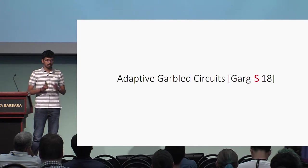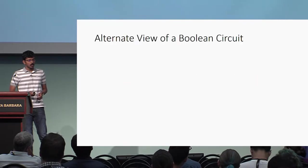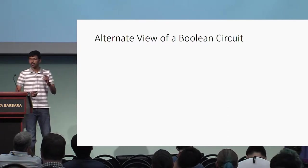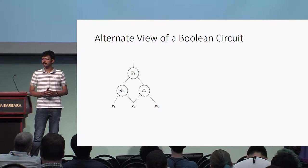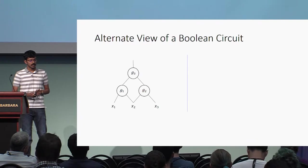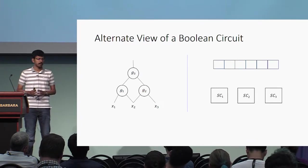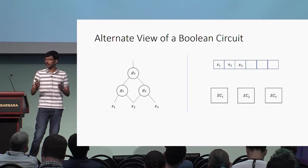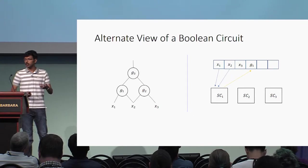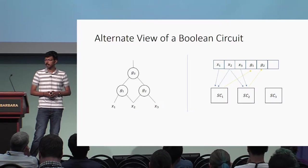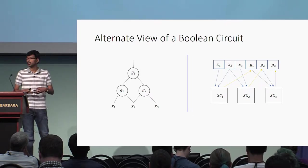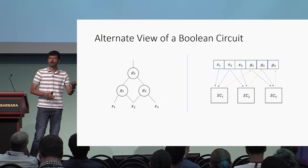Let me start with a brief overview of the construction of adaptive garbled circuits. The starting point is to view a Boolean circuit in an alternative form. Consider a simple Boolean circuit with three gates G1, G2, and G3, taking in three input bits X1, X2, and X3. This circuit is viewed as a sequence of three step circuits along with a database or memory. The database is initially loaded with X1, X2, and X3. The first step circuit reads X1 and X2, computes the output of gate G1, and writes it back. The second reads X2 and X3, computes G2, and writes it back. The final step circuit reads G1 and G2, computes G3, and writes it back. Any Boolean circuit can be viewed in this form.